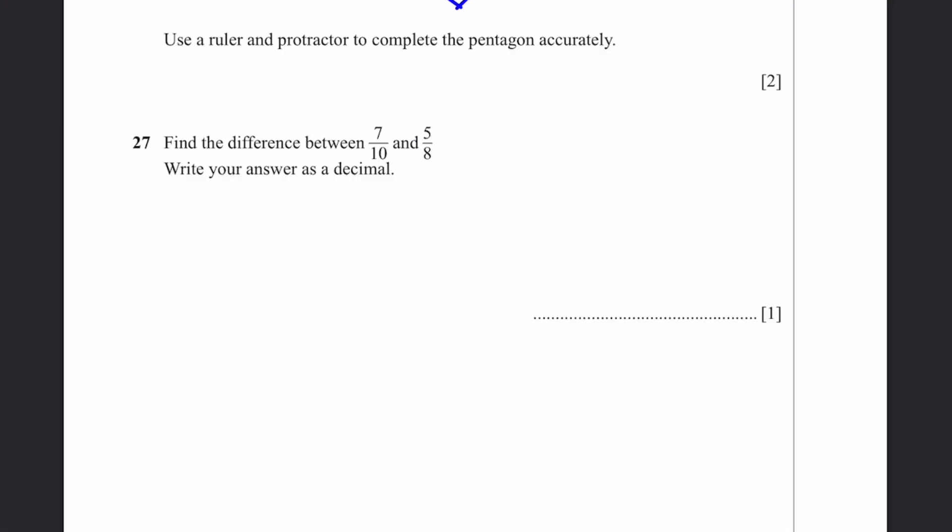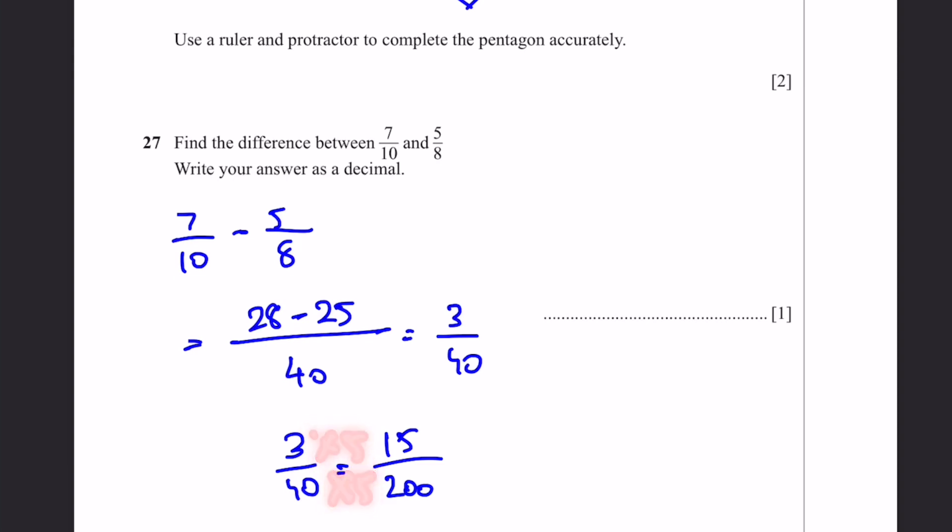Question 27. Find the difference between 7 by 10 and 5 by 8. Write your answer as a decimal. 7 by 10 minus 5 by 8. The LCM of these two is 40. We multiply 10 into 4, so we multiply 7 into 4, which is 28. We multiply 8 into 5 to get 40, so multiply 5 into 5, which is 25. 28 minus 25 by 40 equals 3 by 40. Now let's convert this to a decimal. 3 by 40 equals 15 by 200, which equals 7.5 by 100 or 75 by 1,000, and that equals 0.075. That's the answer.